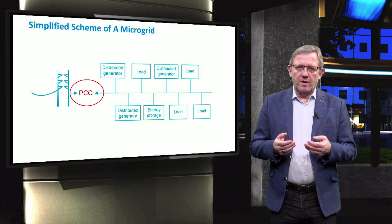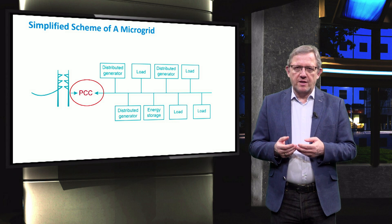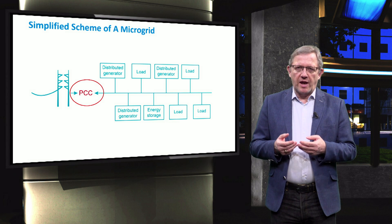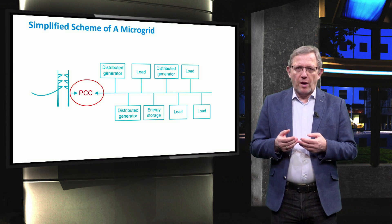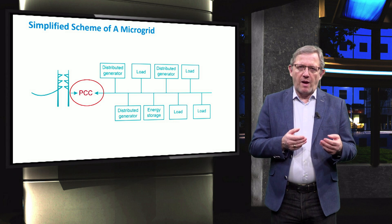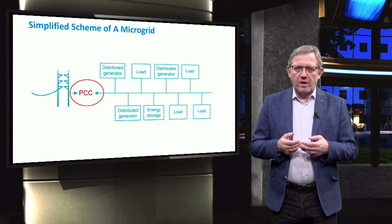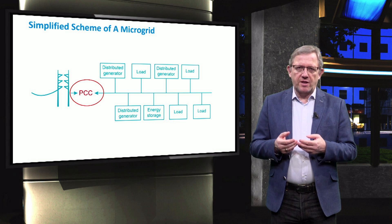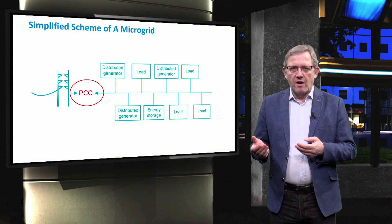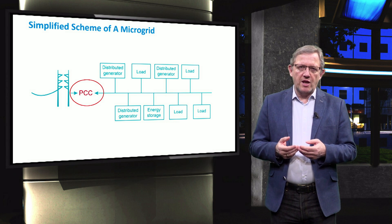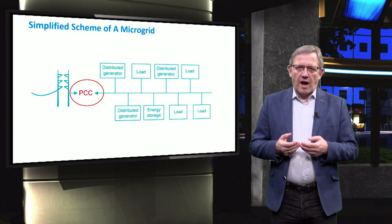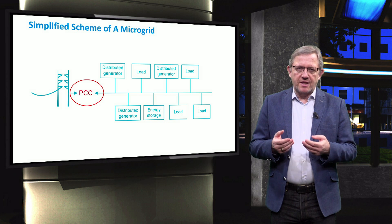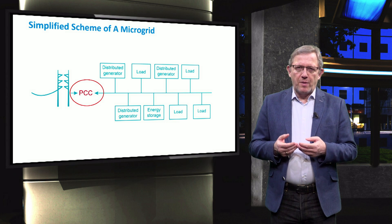For example, in the common case of existing facilities with AC loads, the most suitable option is probably an AC microgrid because it needs minimal modifications on the existing installations. However, for new installations, other alternatives — for example DC — with better performance can be considered.